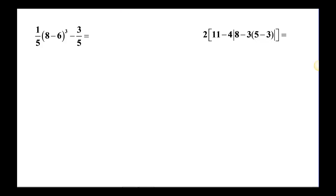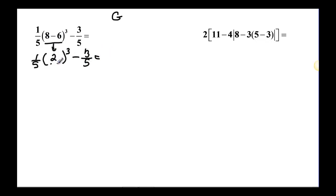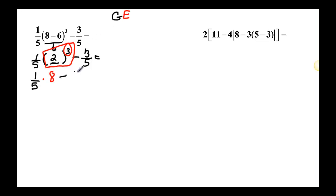Let's look at another set of examples. We have grouping symbols right here, so let me rewrite this problem: 1 fifth times whatever we get in the grouping symbol, cubed, minus 3 fifths. Inside the grouping symbol, 8 minus 6 is going to be 2. Then the next step is exponents, and we have an exponent right here. So recopying the problem: 1 fifth times 2 cubed. And 2 cubed happens to be 8, so we have 1 fifth times 8, minus 3 fifths.